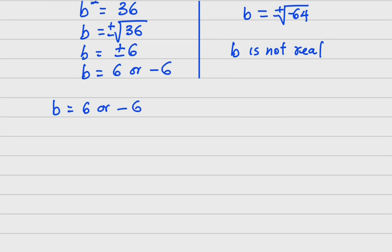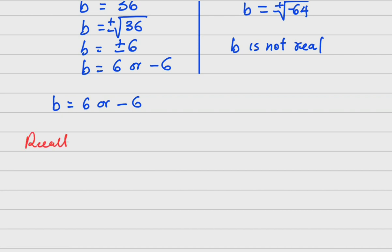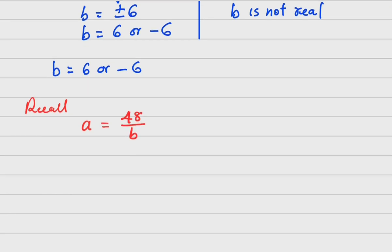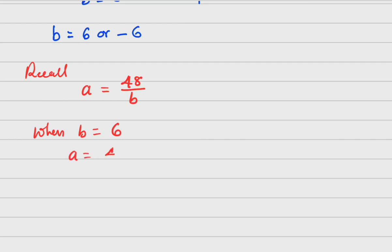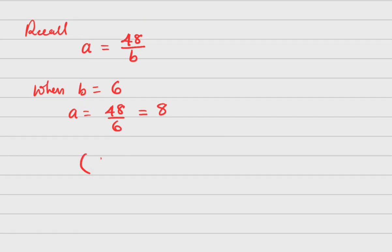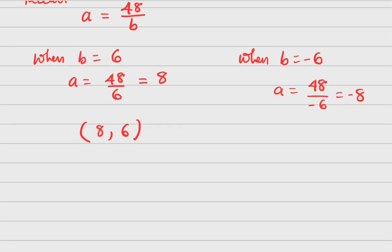We work with b = 6 or b = −6. Recalling that a = 48 / b: when b = 6, a = 48 / 6 = 8, giving (a, b) = (8, 6). When b = −6, a = 48 / (−6) = −8, giving (a, b) = (−8, −6).